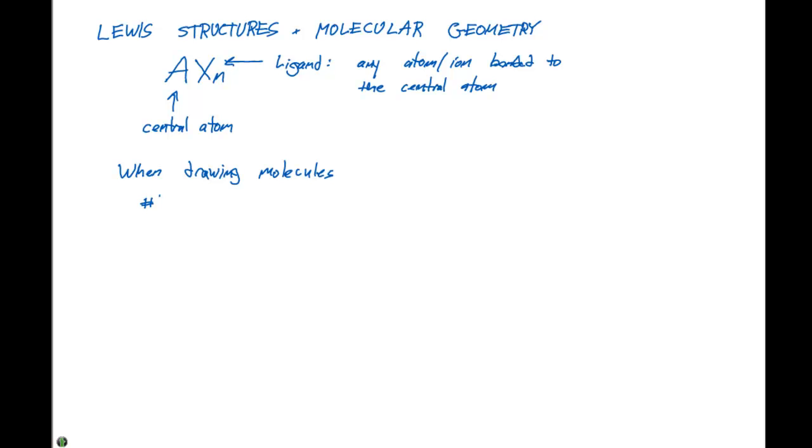So number one is we want to first identify the central atom. And this is very, very important because we need to identify or we need to be able to see how this central atom is going to achieve its octet. It's going to achieve the octet in any way that it can. So when we're looking at this particular octet, we need to figure out how many electrons it's going to need to achieve that.